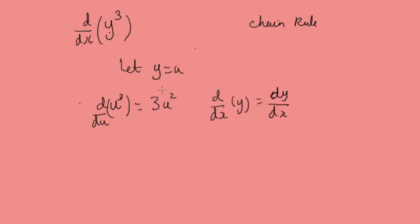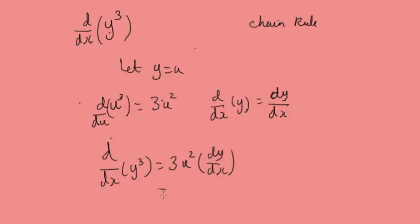This might seem like a bit of a sleight of hand. So the derivative d by dx of y cubed will be: we take the derivative of u cubed, which is 3y squared, and then multiply by the derivative of y, which is dy by dx. So d by dx of y cubed equals 3y squared dy by dx. That is how you differentiate these implicit equations — you'll often find that dy by dx is embedded within the derivative of these functions, because y varies as x varies.